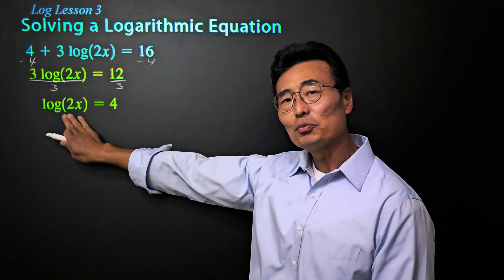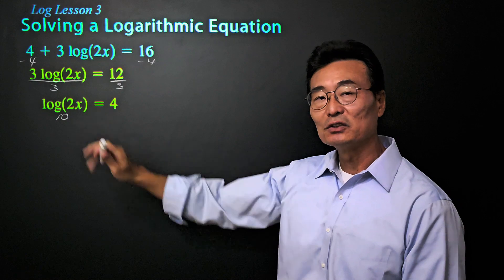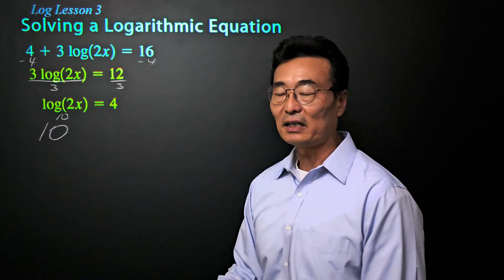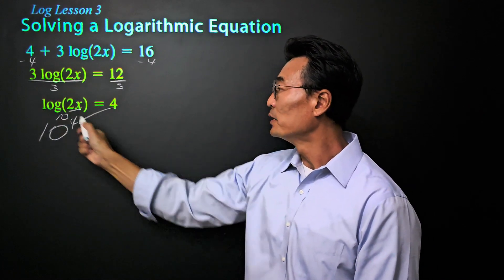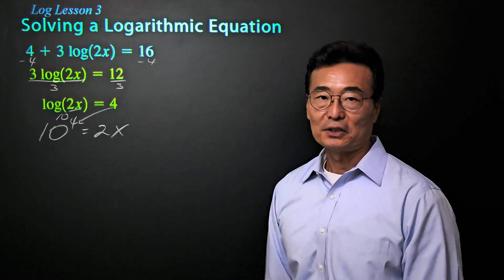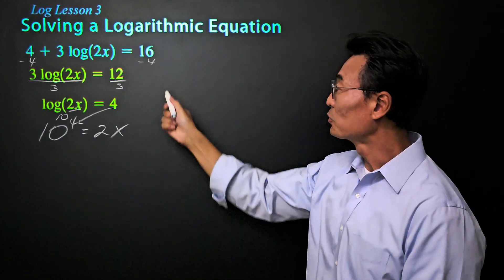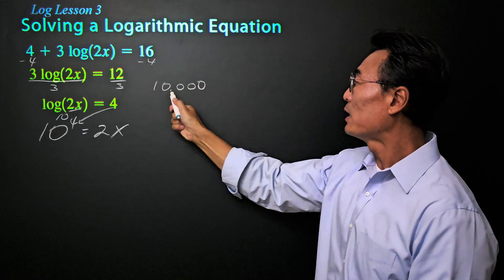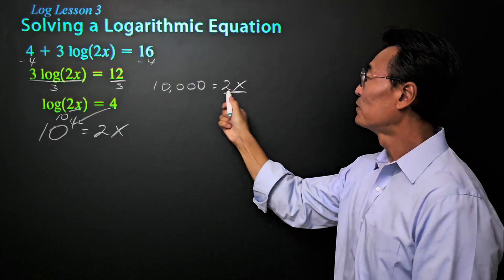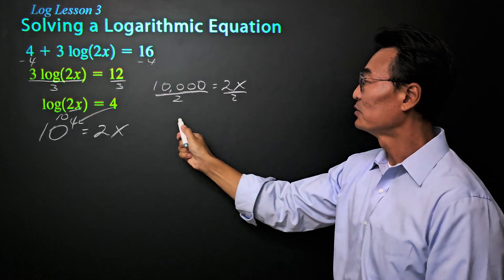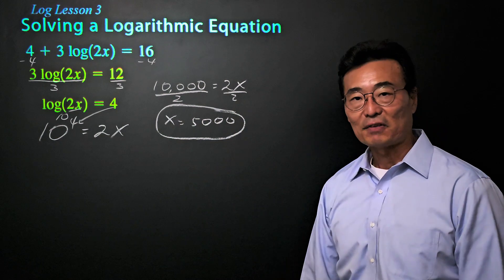When there's no base written, it's given that the base is 10. To change this log equation into an exponential equation, we start with the base — the 10 — bring the four as the exponent, and then set that equal to two x. Ten to the fourth power, by adding four zeros to a one, we simply get 10,000. Then we set that equal to two x, and to solve for x, we just divide by two, giving us x equals 5000 as our final answer.